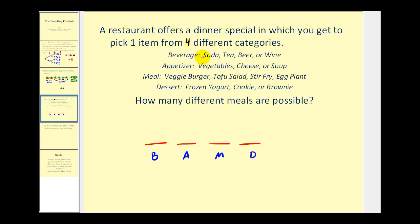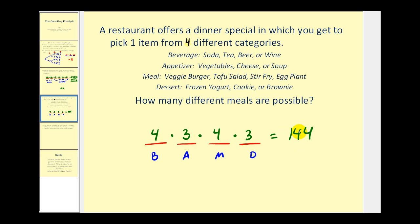Looking at the beverage options, there are four possibilities. For appetizers there are three. For the main meal there are four options, and for dessert there are three options. The product of these gives us the total number of different dinners possible: four times three is twelve, times four is forty-eight, times three equals one hundred forty-four. So there are one hundred forty-four ways to select a dinner under these conditions.